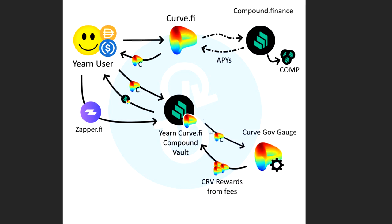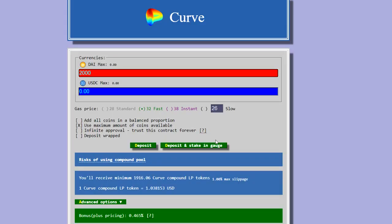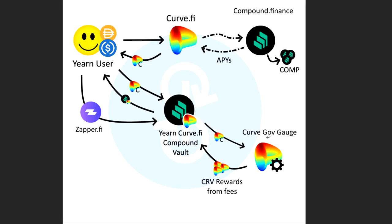The first thing they're going to do — this is a pretty standard Curve vault — they're going to stick those C tokens into the Curve governance gauge. That's basically what deposit and stake in gauge does. So they're going to stake this in the gauge for you. Now why don't you just do it yourself? There's a reason. By staking it in the gauge, they're going to get rewards. You would get rewards if you did it manually, but you would need to harvest these rewards — you need to claim them from the gauge every once in a while. The vault will harvest these rewards from the Curve gauge optimally.